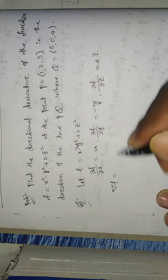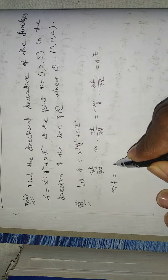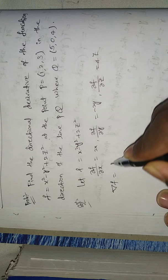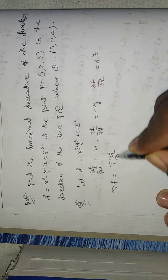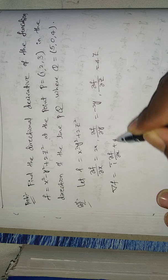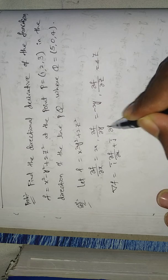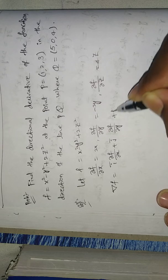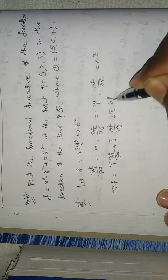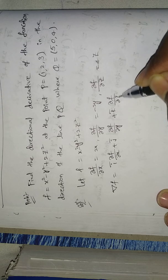Write del f: del f equals i-bar times ∂f/∂x plus j-bar times ∂f/∂y plus k-bar times ∂f/∂z.